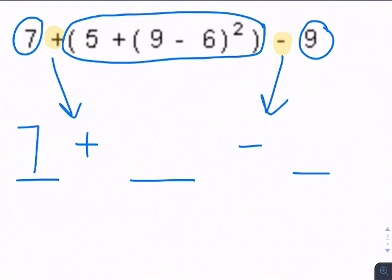7 isn't going to change. This 9 isn't going to change. But this middle, it's got a lot of pieces to this term. I see exponents, I see parentheses. I need to do my parentheses first. So this becomes 9 minus 6, which is 3. So it becomes 5 plus 3 squared. I need to do 3 squared first.